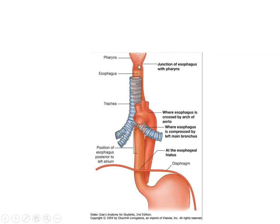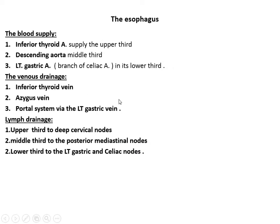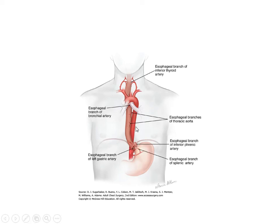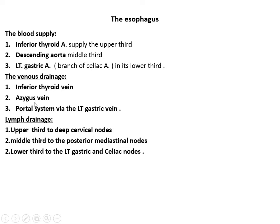The blood supply of the esophagus divides by thirds: the upper third is supplied by the esophageal branch of the inferior thyroid artery; the middle third by the thoracic aorta; and the lower third by a branch of the left gastric artery. Similarly, the venous drainage: upper third to the inferior thyroid vein, middle to the azygos vein, and lower third to the portal system via the left gastric vein. Lymphatic drainage: upper third to the deep cervical nodes, middle to the posterior mediastinal nodes, and lower third to the left gastric and celiac nodes.